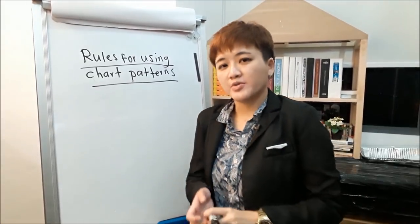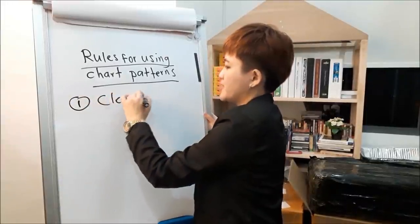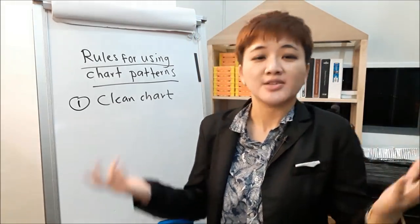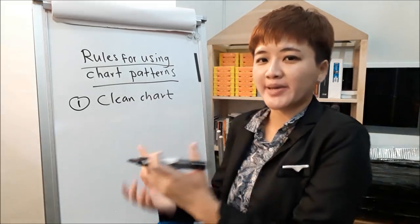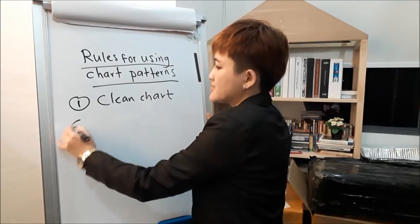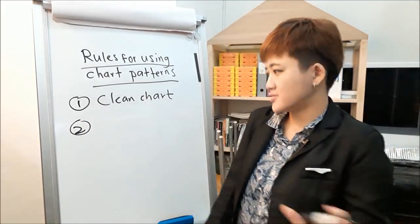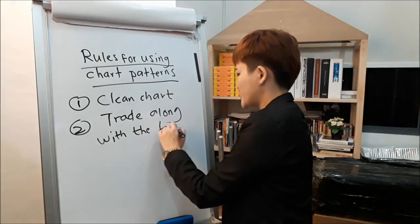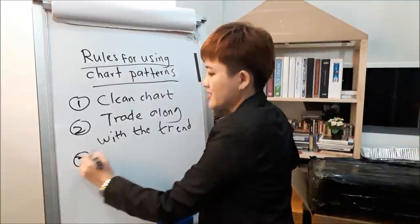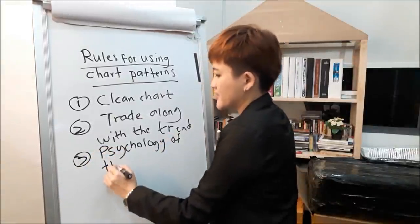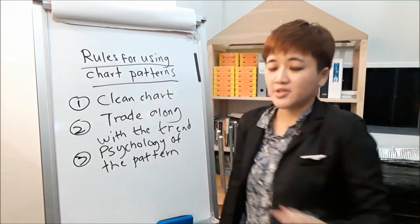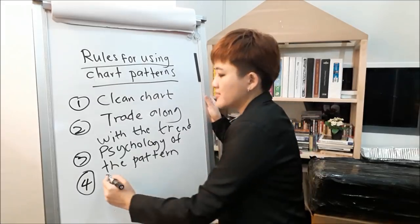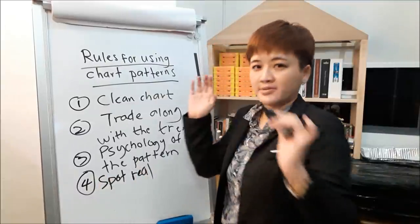Rule number one of using chart patterns: you've got to have a clean chart. You need to be willing to have clean charts, because some people like to clutter their chart with all kinds of colorful indicators — pink, purple — which looks good but isn't helpful. Second thing, especially if you're a beginner: trade along with the trend. Number three: learn the psychology of the pattern, just like how you learn candlesticks, so you don't need to memorize all the weird names.